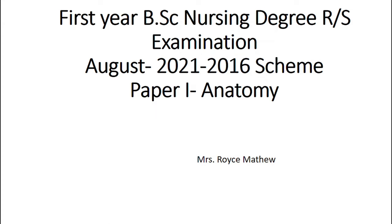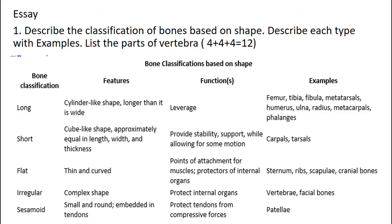Good morning. Today's class we will see about the first year BSc Nursing Anatomy custom paper of August 2020-21, 2016 scheme. The first question was: describe the classification of bones based on its shape and display with example. List the parts of the vertebra. Here we can see the bone classification, its features, functions, and examples.